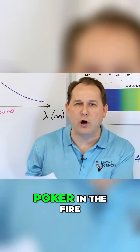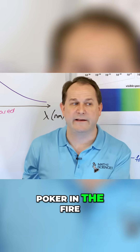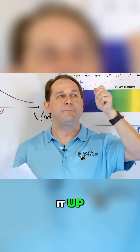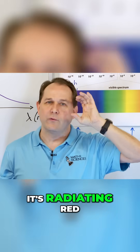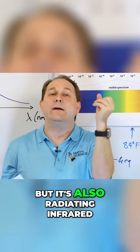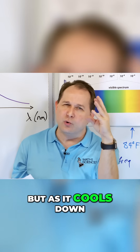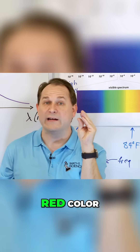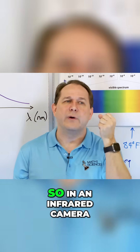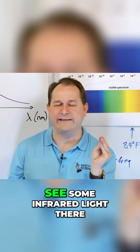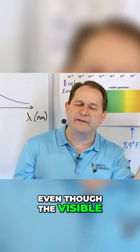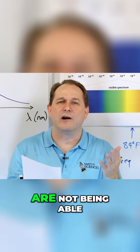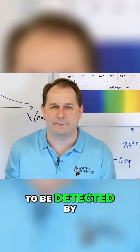If you put a poker in the fire, the campfire, if you make it red hot and hold it up, you see the red color. It's radiating red, but it's also radiating infrared. But as it cools down, you don't see as much of the red color, but it's still hot. So in an infrared camera, we're still going to see some infrared light there, even though the visible isn't radiating as much, because the infrared photons are not able to be detected by your eye.